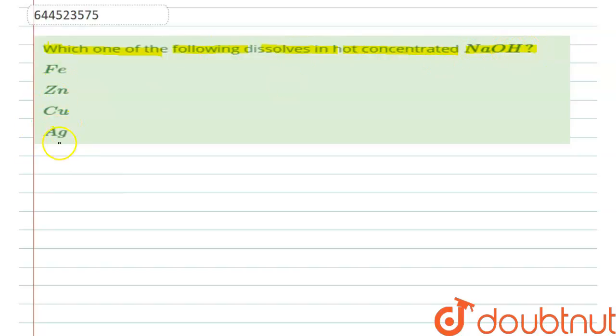We have been provided here four options and we need to choose the correct one. In this question, we need to find out that out of all the four metals that have been given here, which one will dissolve in hot concentrated NaOH.